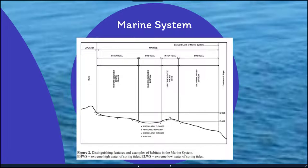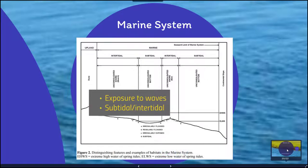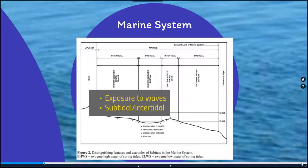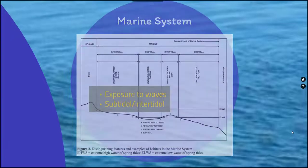Even if there's not water continually covering this intertidal section, because of the fact that it's found within this space between the continental slope and the dune area, we include that in this marine system and define it as a form of a wetland. There's going to be exposure to waves in these systems and a combination of subtidal as well as intertidal sections.